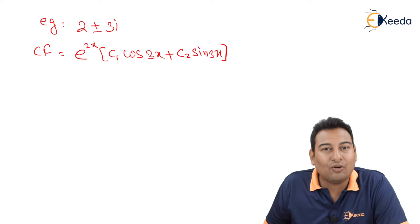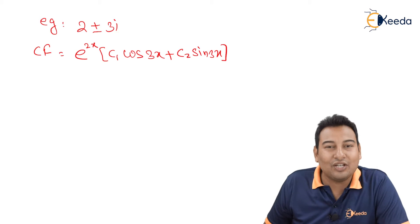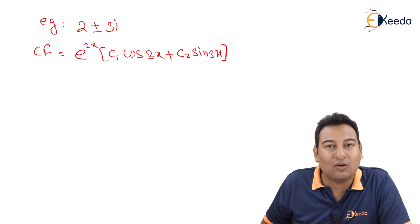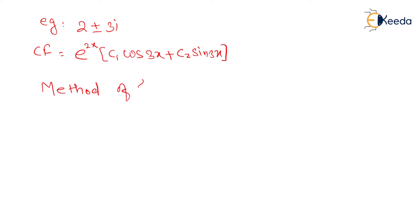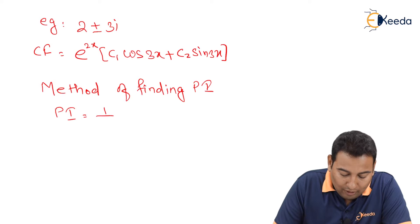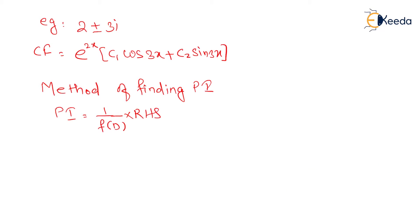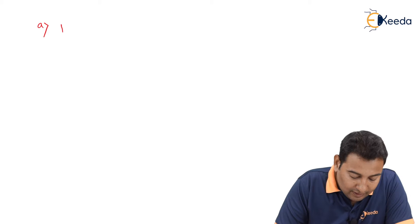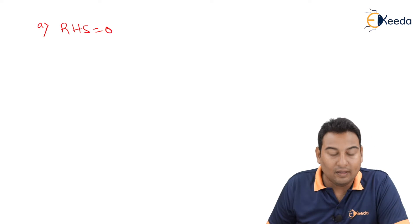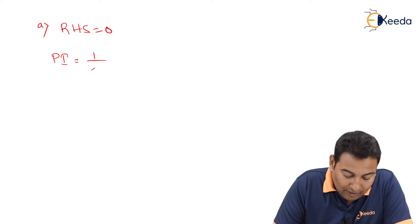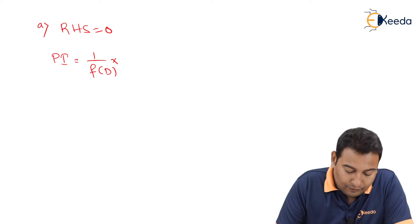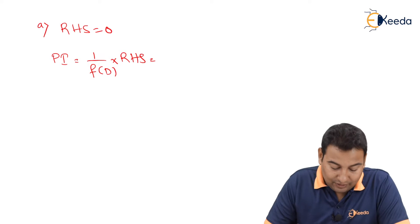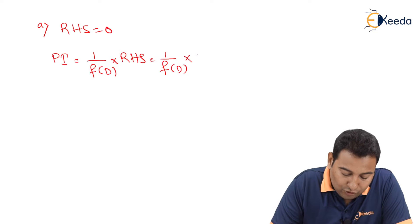Your solution is y = CF + PI. We just found CF; now we need to find PI. PI is given by the formula: PI = (1/f(D)) · RHS. The first case for PI is when RHS = 0. Applying the formula: (1/f(D)) · 0 = 0, so PI = 0.